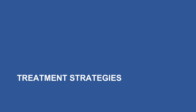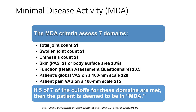Just like in the RA world, we do have treat-to-target in the spondyloarthritis world, although it's not yet mature because we haven't agreed on the target, which makes it more difficult. The MDA — minimal disease activity — is a framework for psoriatic arthritis where you need to achieve about five out of seven criteria to be deemed in minimal disease activity.